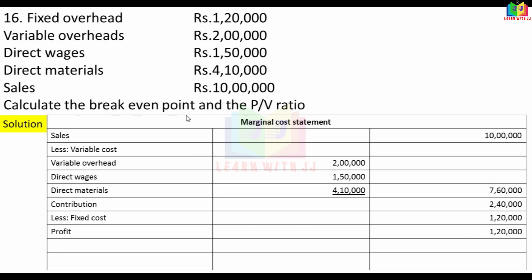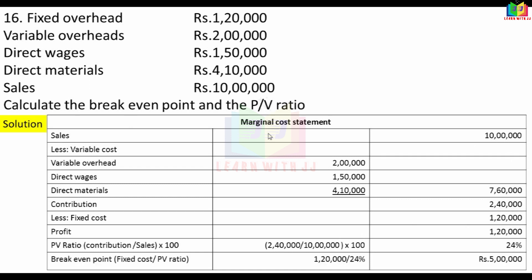We have the break-even point. PV ratio is contribution by sales multiplied by 100. Contribution is 2,40,000. Sales is 10,00,000. PV ratio is 24%. Now break-even point is fixed cost divided by PV ratio. Fixed cost is 1,20,000 divided by 24% = 5,00,000 break-even point.